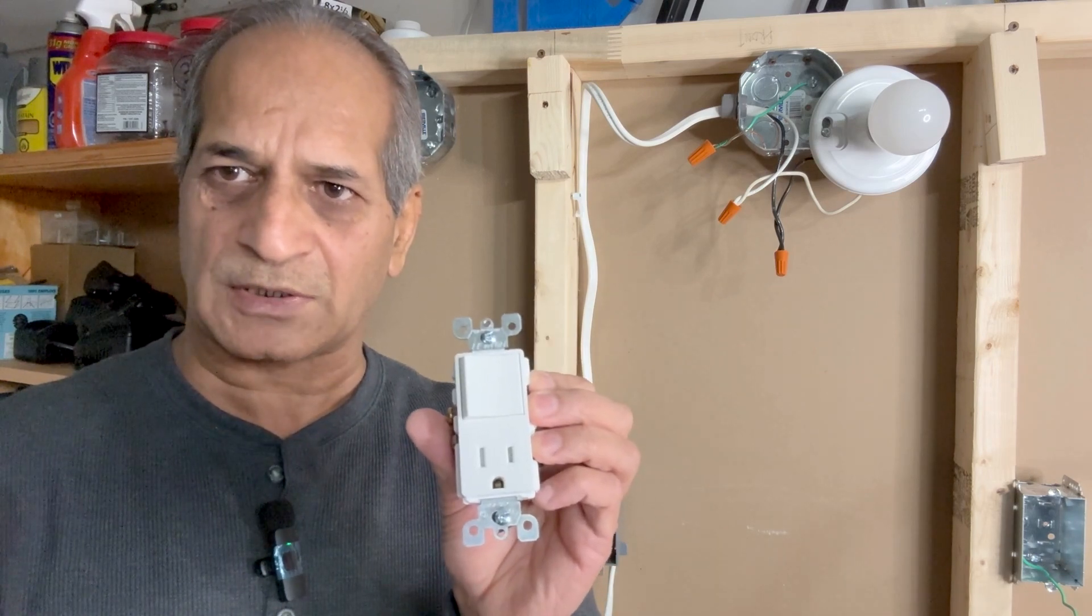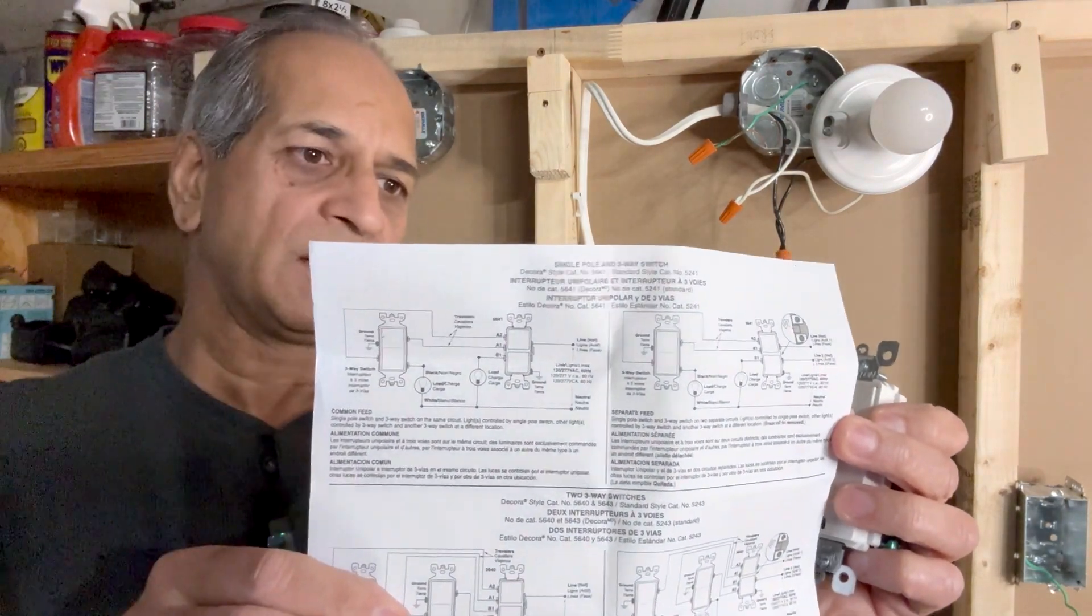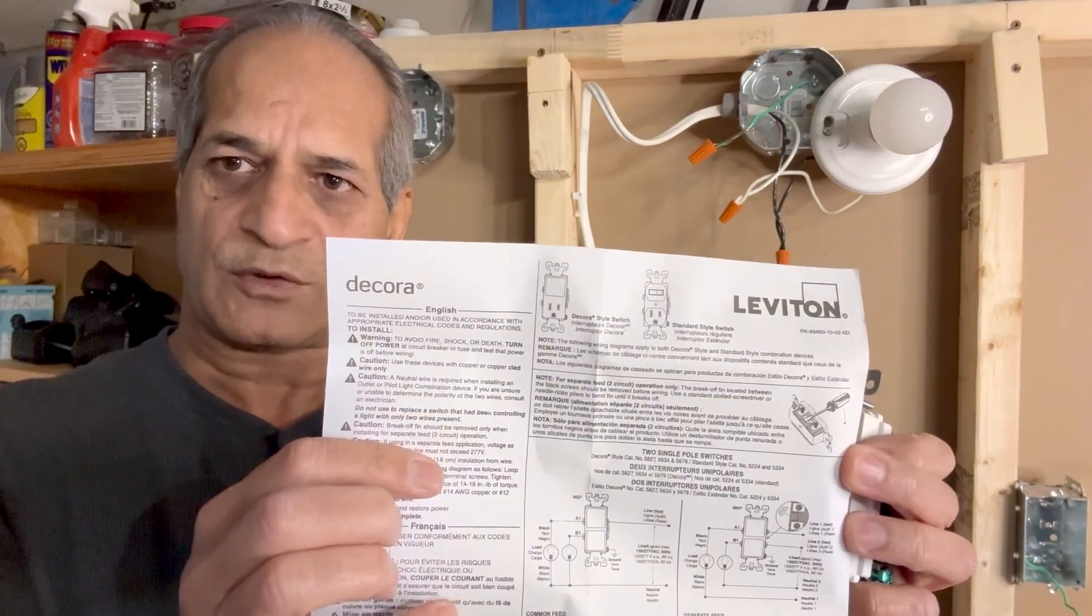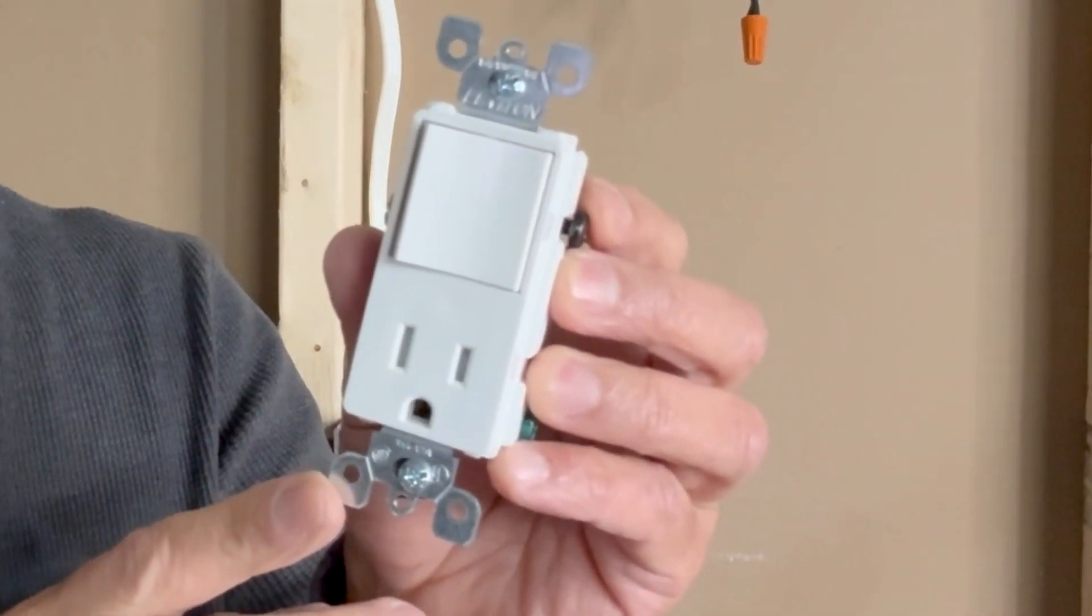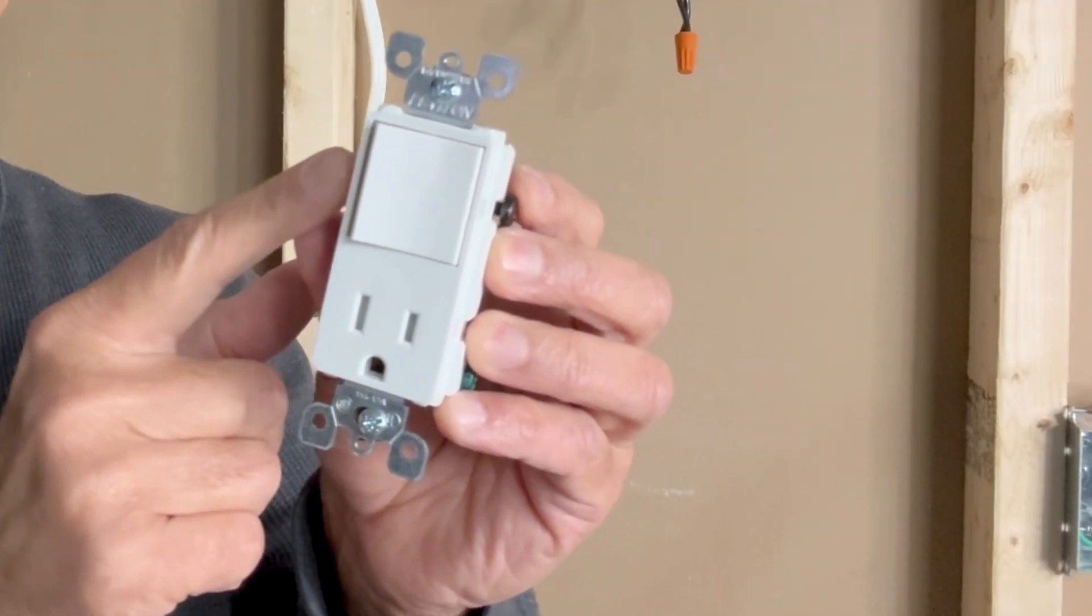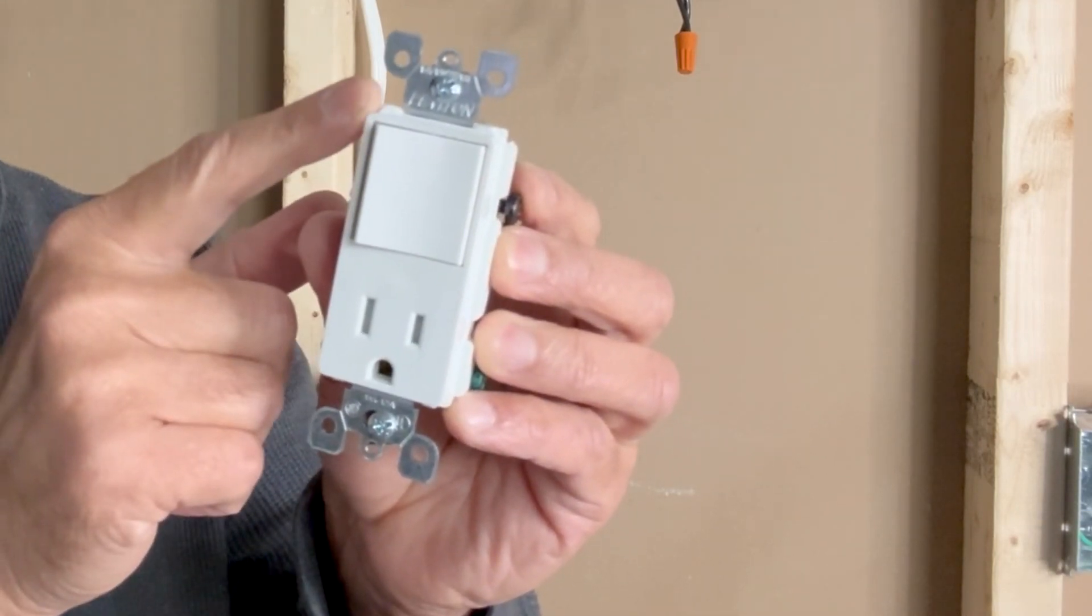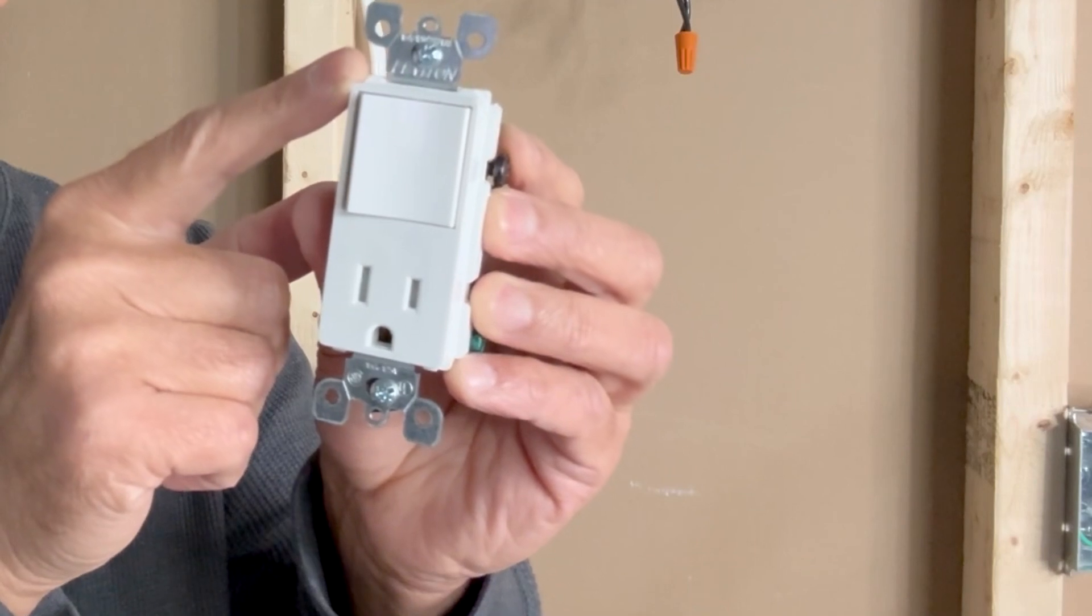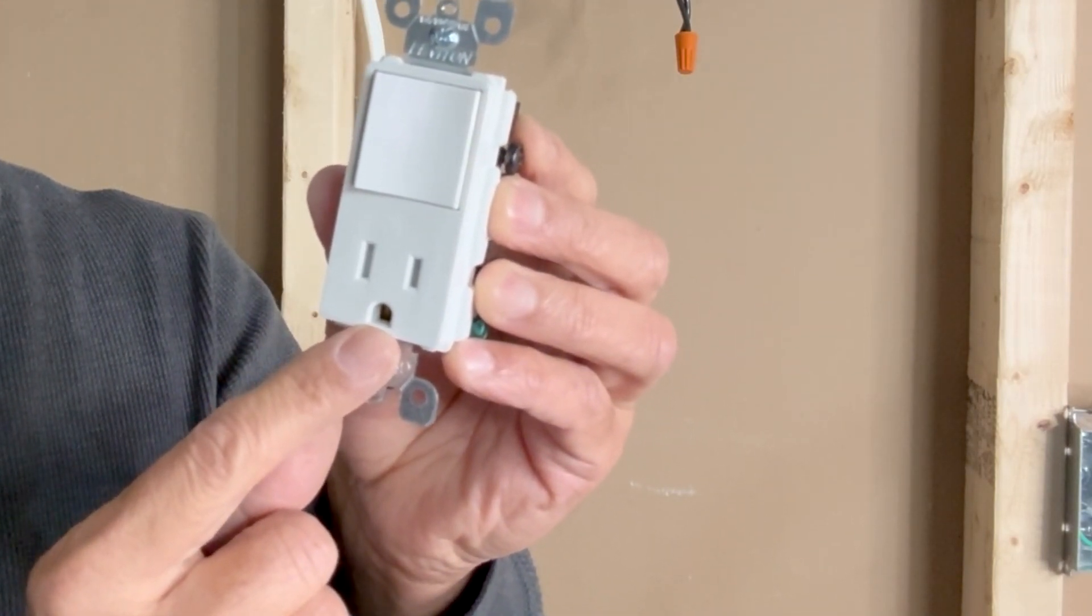This Leviton switch and outlet combination comes with detailed instructions which show how to do the connections and which wire goes to which terminal. In this combination device we keep the switch on top and the outlet at bottom. Leviton is marked here, just keep this Leviton marking on top side. And of course you can see the grounding terminal of the outlet is facing down.